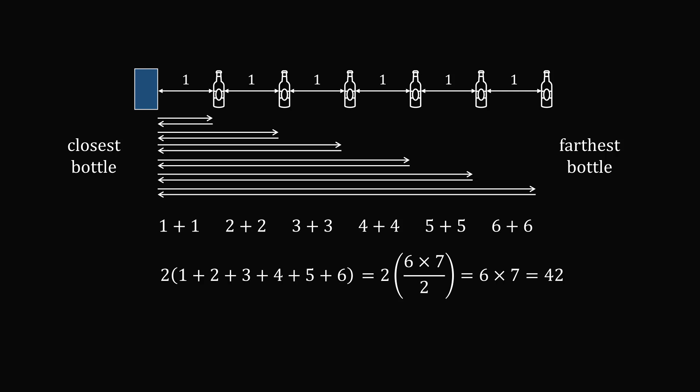We can generalize this when we have 24 bottles, the final distance will be 24 plus 24. And we can calculate that the total distance traveled by each of the contestants would be 600 units. We can generalize this to n bottles, and we would end up seeing that the total distance traveled is equal to n multiplied by n plus 1. The two distances are the same.